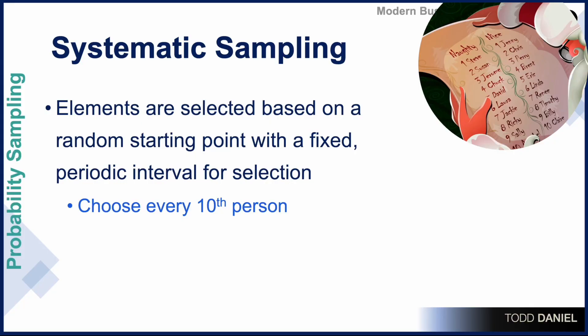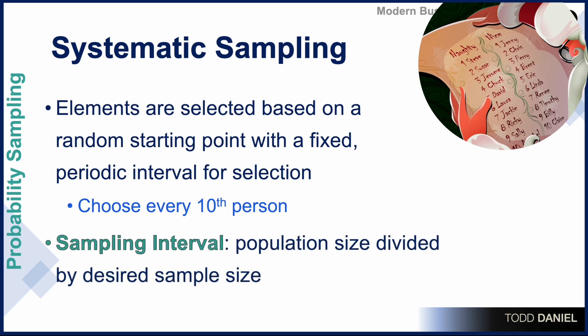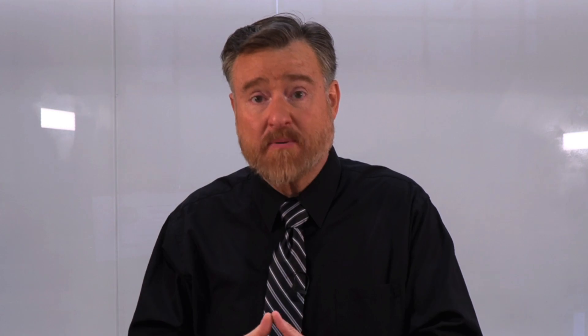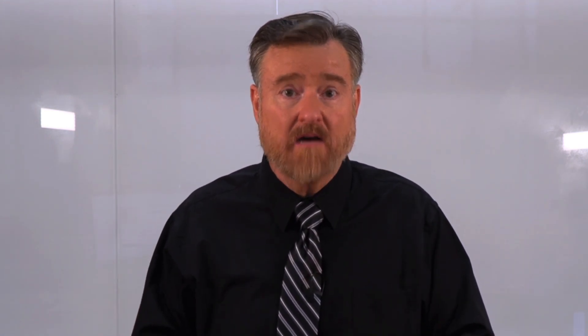Another random sampling technique that we can employ is called systematic random sampling. In systematic random sampling, the elements are selected based on a random starting point with a fixed periodic interval for selection. We begin by making a list of every name, randomize that list, then determine that we want to sample 10% of our population. We randomly select a number between 1 and 10 as our starting point, then select every 10th name after that. When done, we have 10% of our total population as part of our systematic sample.